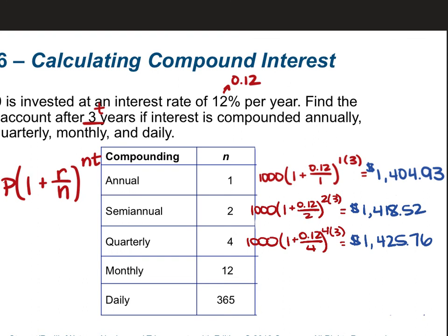For monthly, we're going to do 1,000 times 1 plus 0.12 divided by 12, all raised to the power of 12 times 3. Using our calculator, we get $1,430.77.